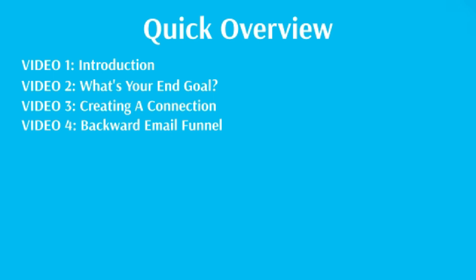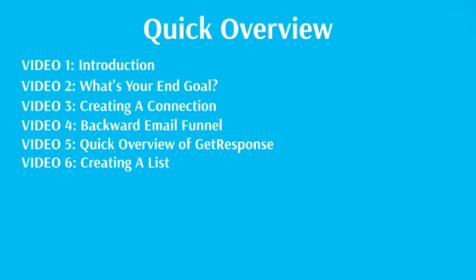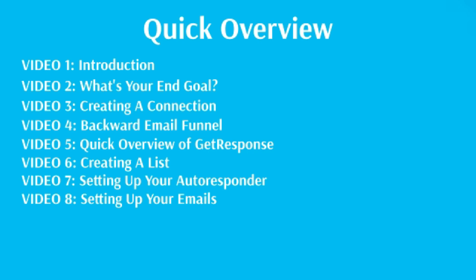Video number four will talk about the backward email funnel — how to create a high converting email autoresponder series. Video number five is a quick overview of GetResponse where we'll jump in, show you the dashboard, and give you a better idea of what to expect. Video number six covers creating a list, and video number seven covers setting up an autoresponder series. Video number eight will show you how to set up your emails inside GetResponse — day one, day two — so that a series of, say, 12 emails is released based on the timing you choose.